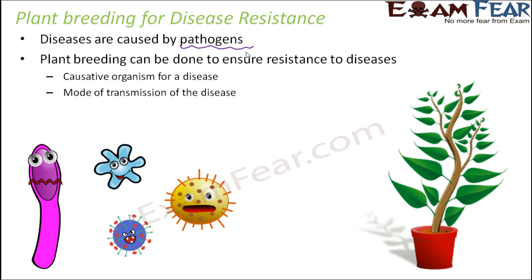On similar lines, plant breeding is done to ensure resistance to diseases, based on two facts: the causative organism for a disease and the mode of transmission of the disease. A large number of bacteria and viruses are responsible for many plant diseases — for example, late blight of potato, red rot of sugarcane, and tobacco mosaic virus. Once you know the organism and the way the disease gets transmitted from one plant to another, you can definitely help in preventing the disease.